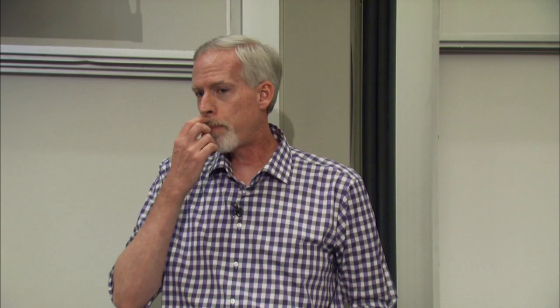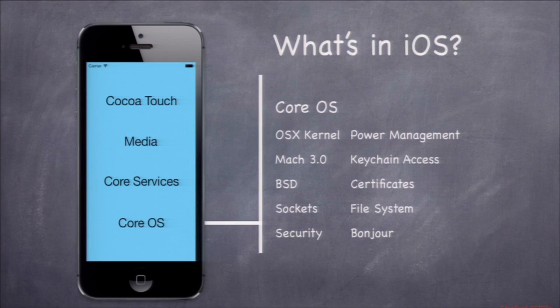I've divided iOS into four groups: Core OS, which is stuff close to the hardware; Core Services, which is an object-oriented layer on top of that; Media, because these devices are basically iPods with a phone or big screen — media is really important; and finally Cocoa Touch, which is the UI layer — all the buttons and switches.